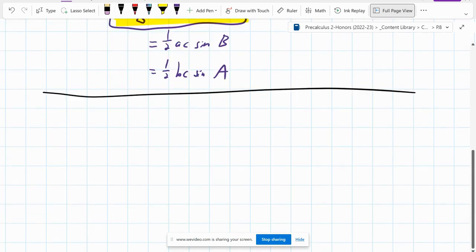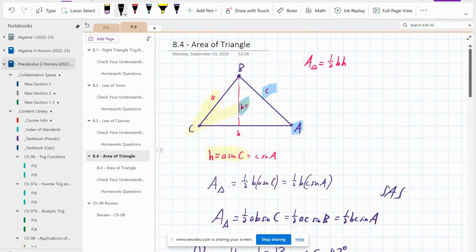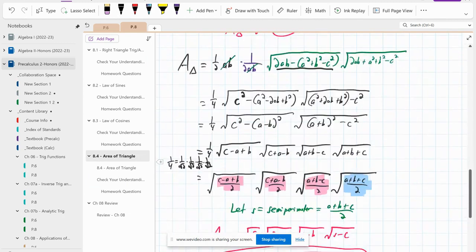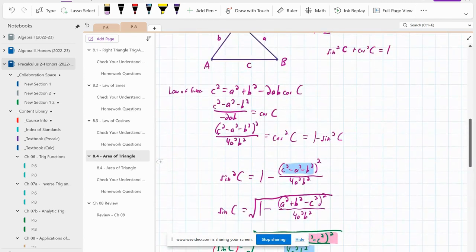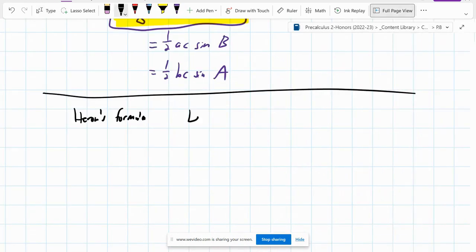The next formula is called Heron's formula. And it takes a little bit of time to derive. I actually have the derivation in OneNote. But if you want to see the derivation, it uses the law of cosines and the area of a triangle in terms of sine to synthesize this. We start by saying let s equal a semi-perimeter. It's easier to write this in terms of another variable. A semi-perimeter is taking all three sides and dividing it by two, adding them up, divide by two. It's half the perimeter.